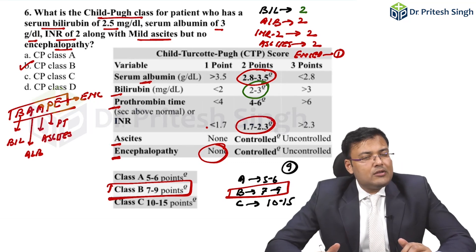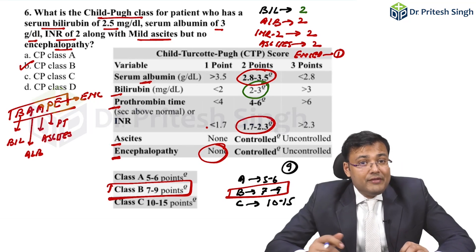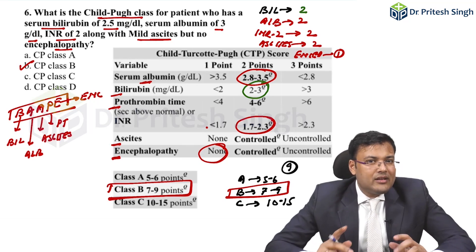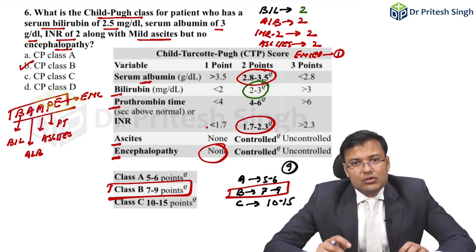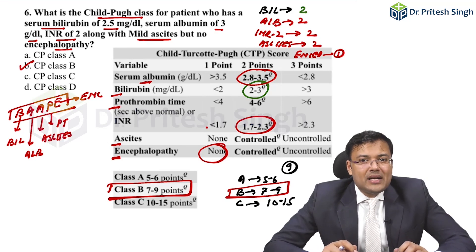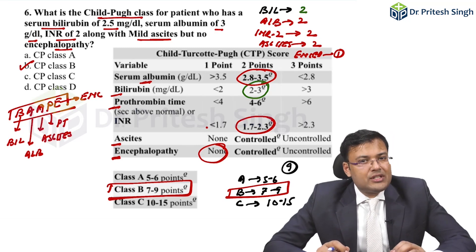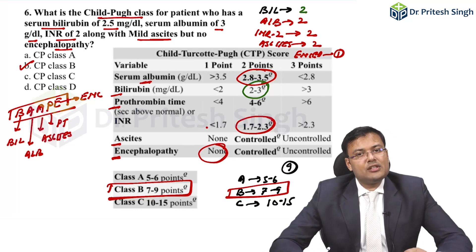Similar questions are also asked and expected in future exams. Along with the Child-Turcotte-Pugh scoring, you should also remember the Ranson score and the Apache 2 score, as similar calculation-based questions on these scoring systems have been asked in past exams.